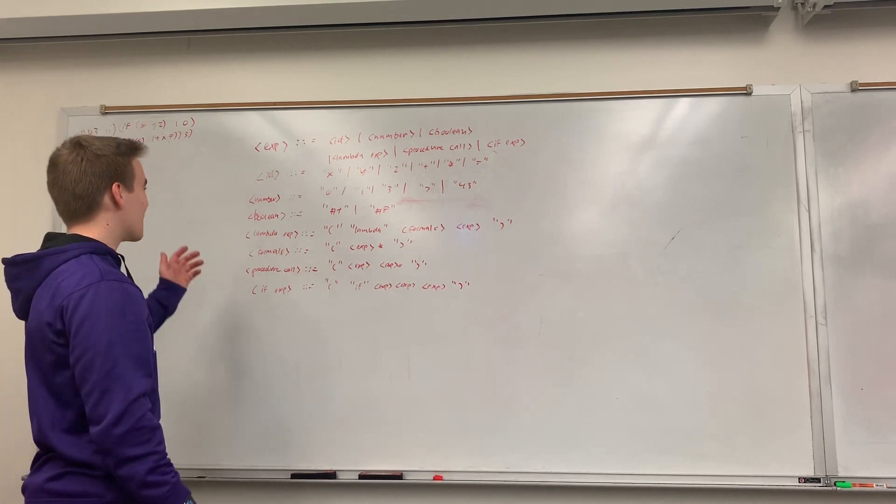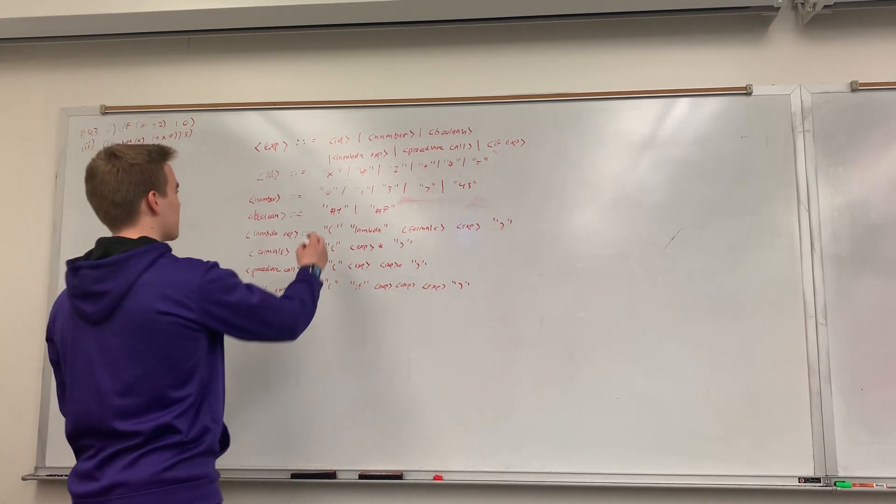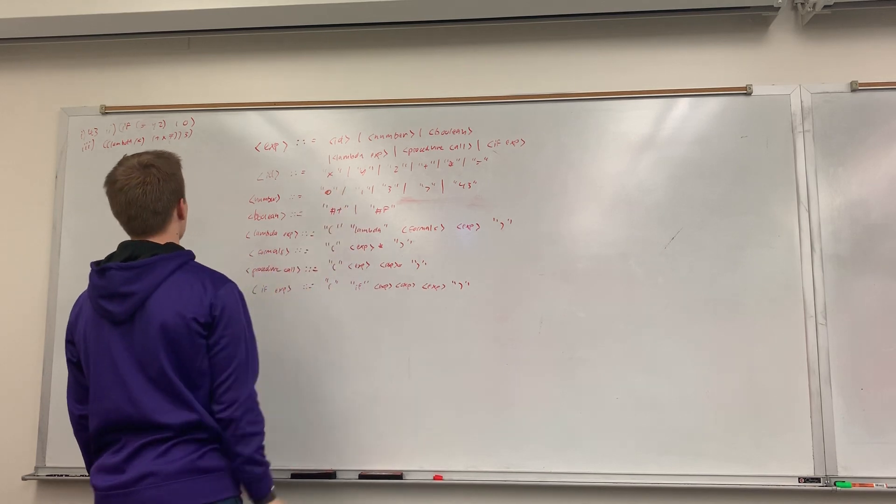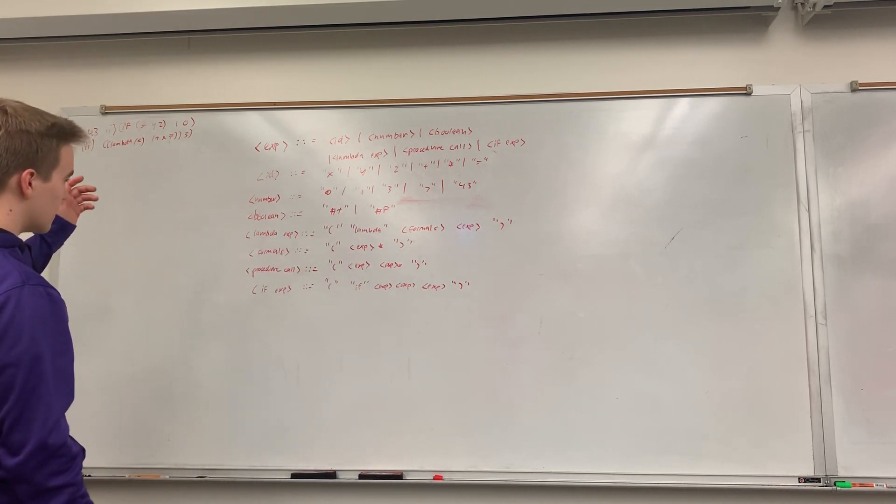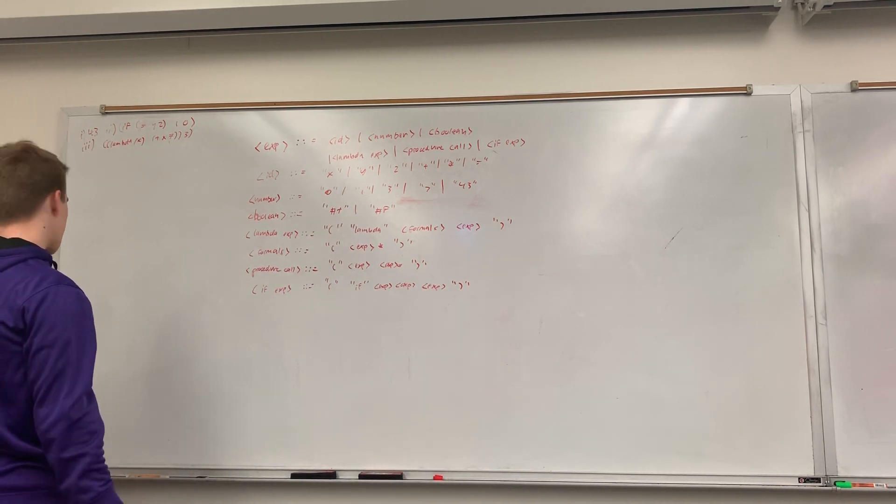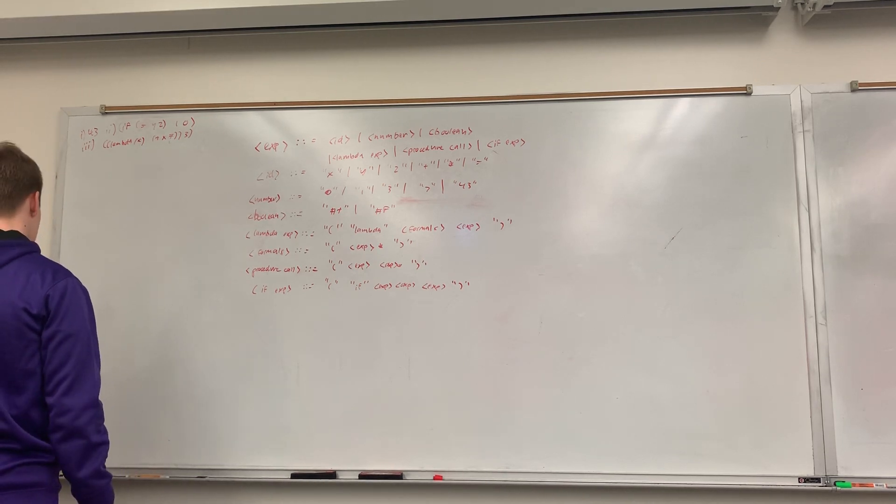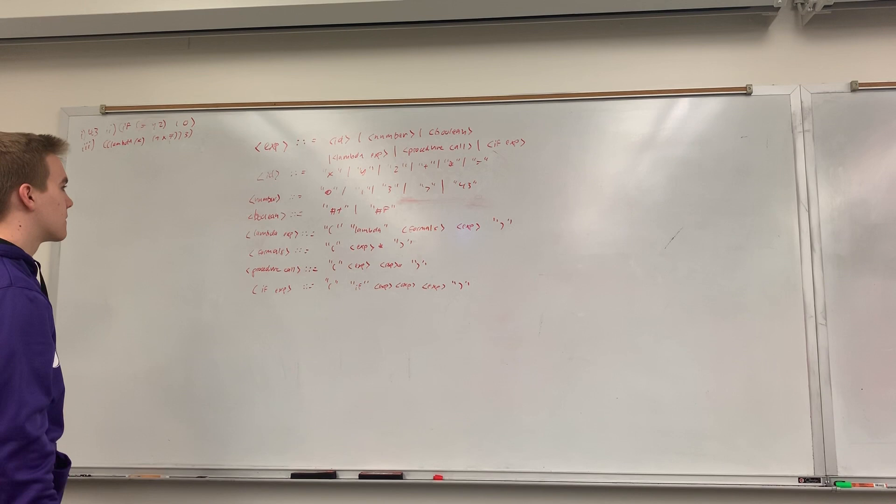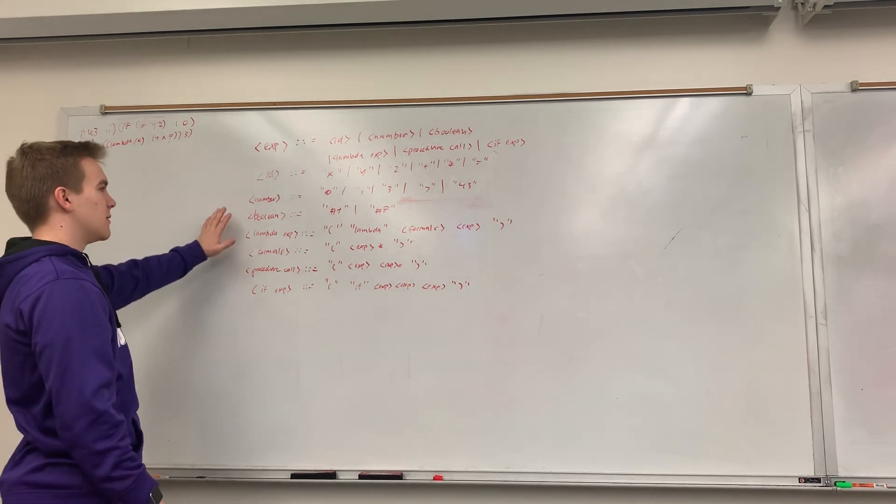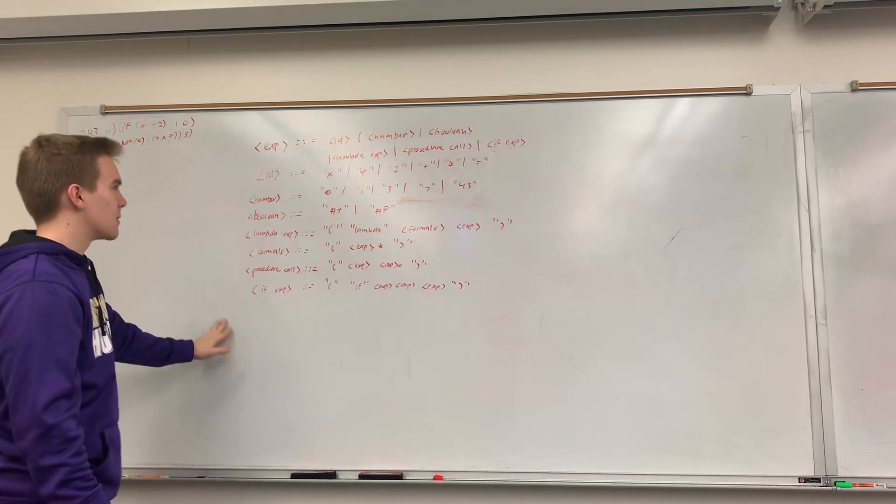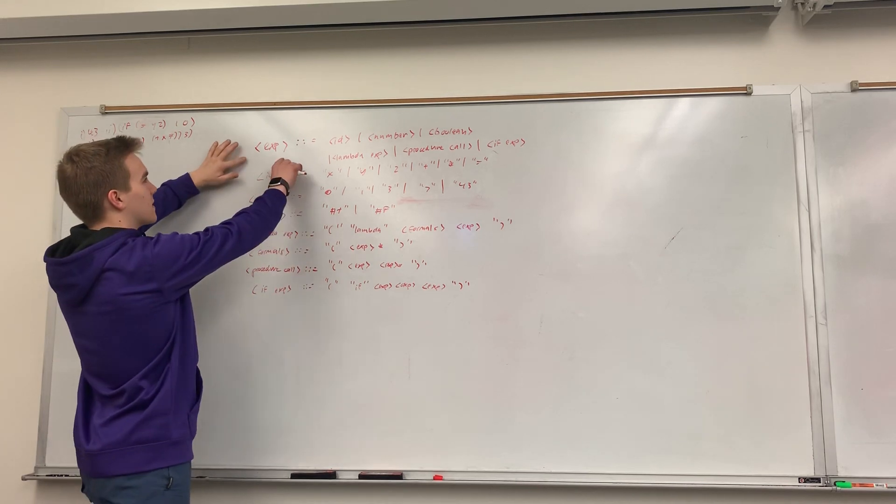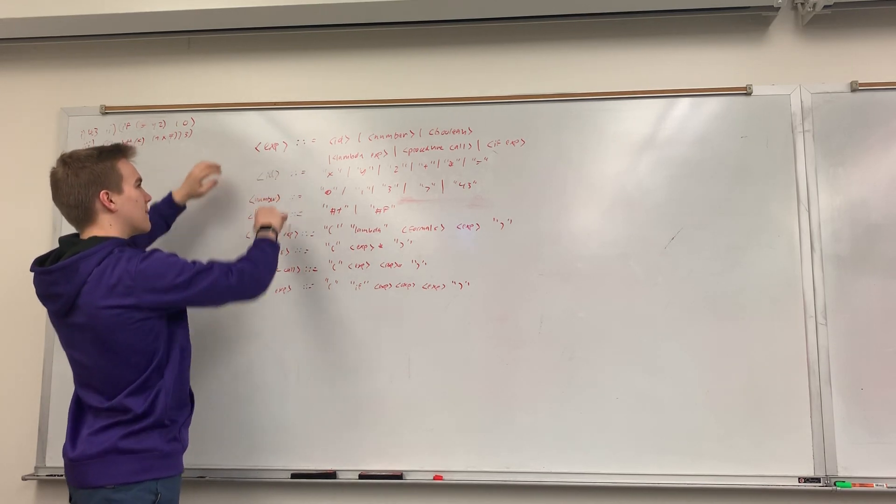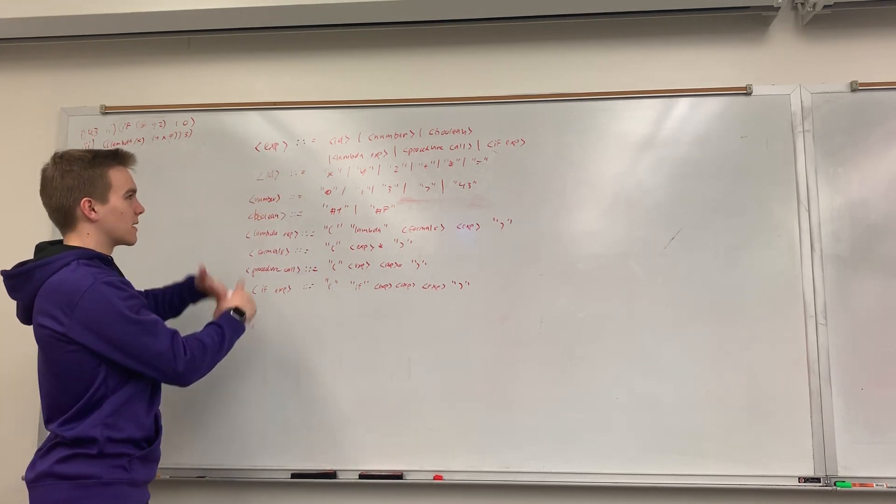All right, problem five. I wrote out all this stuff so I have it easy to access. It asks us to come up with trees that will show us how to get specific outputs from this language. So, maybe you might be a little bit confused by the syntax here, but the idea is that these things, these greater than, less than thingamajiggers, represent something that can be replaced.